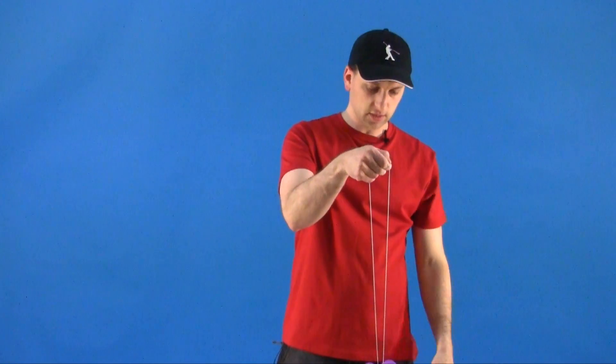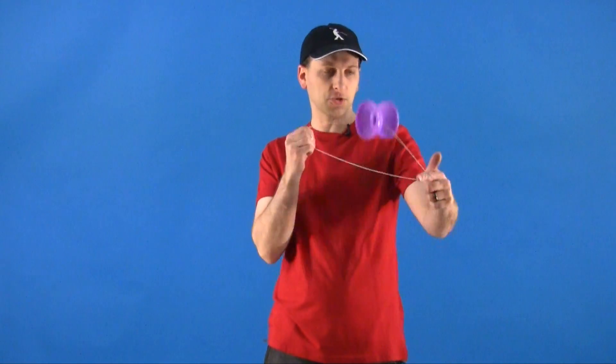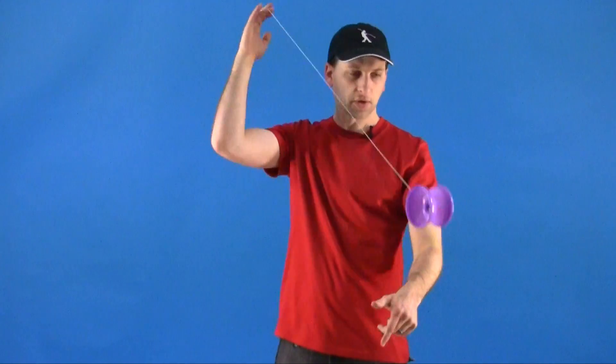The more normal way to do it is to grab the top string just like this and then just pull your hands apart. Now if you were to pull your hands straight apart, the yoyo would just go into that top string and that is a different trick. We will show you that later.